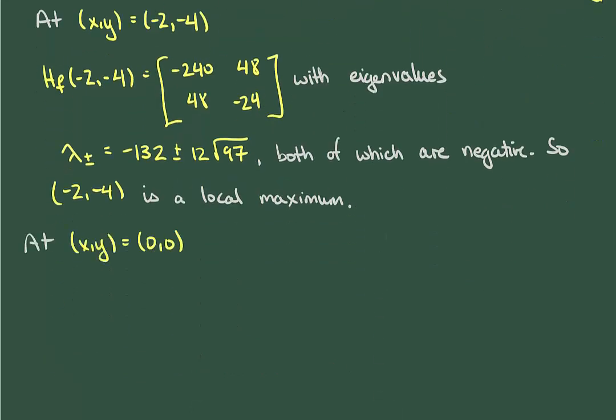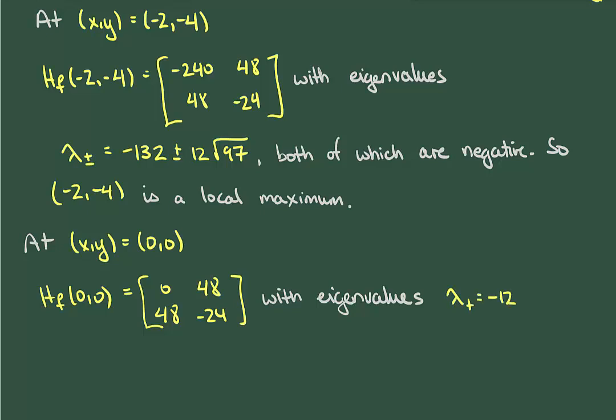Next up is the point (0,0), whose eigenvalues are actually the easiest to find of all three matrices, and in doing so we find one positive eigenvalue and one negative eigenvalue. Thus, (0,0) is a saddle point.